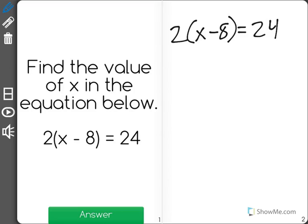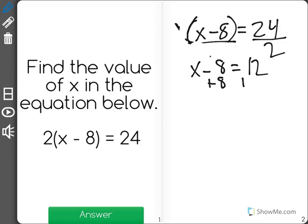The first way is we could see that 2 over here is multiplying this entire chunk of the equation. Now if I just divide both sides by 2, that means that this 2 goes away, and I'm just left with x minus 8 equals 24 divided by 2, which is 12. I could then add 8 to both sides just to find out that x is equal to 20.